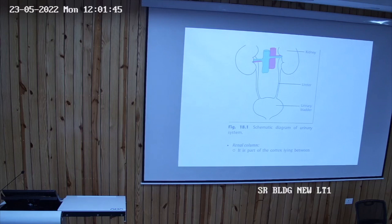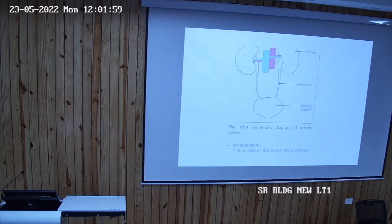The inner part or parenchyma of the kidney consists of an outer layer called cortex and an inner layer called medulla. The cortex part is darkly stained and consists of renal corpuscles and parts of the renal tubules. The medullary part is comparatively lighter.